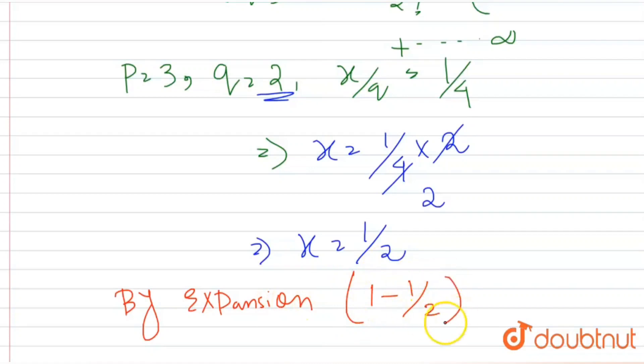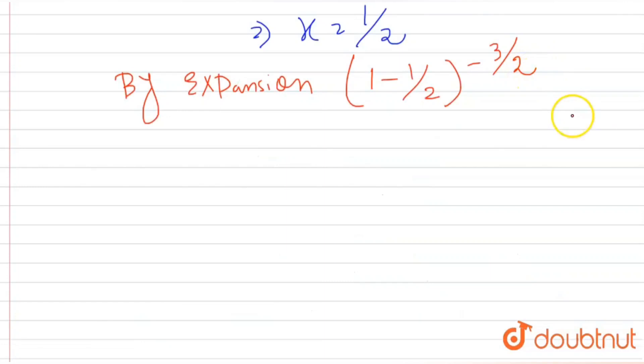1 minus 1 by 2 whole to the power minus 3 by 2, which is equal to, because the expansion was 1 minus x whole to the power minus p by q. So we are just putting the values here. So we will get 1 by 2 whole to the power minus 3 by 2, which is equal to 2 to the power 3 by 2.